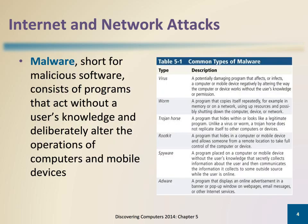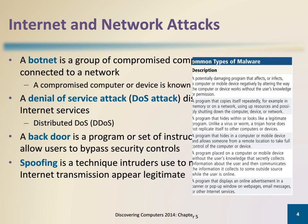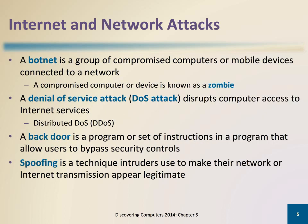Information transmitted over networks has a higher degree of security risk than information kept on an organization's premises. Computer viruses, worms, trojan horses, and others are classified as malware, short for malicious software. Examples of internet and network attacks include a botnet, denial-of-service attack, backdoor, and spoofing.